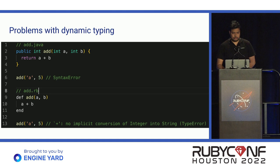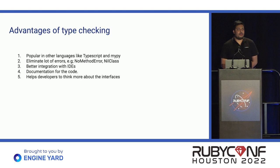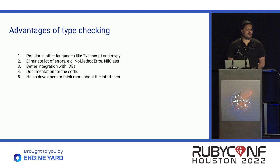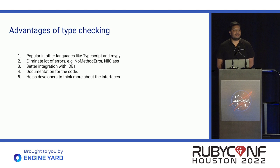The advantages of type checking — it's a proven fact in multiple languages like JavaScript and Python. There are very popular static type checking libraries: TypeScript is a very popular version of JavaScript, and MyPy is a very popular package in Python. It eliminates a lot of errors like no-method errors and nil-class errors at runtime, and provides better integration with IDEs. It also provides documentation for the code, so when we annotate our code with static typing annotations, we get implicit documentation at that point.